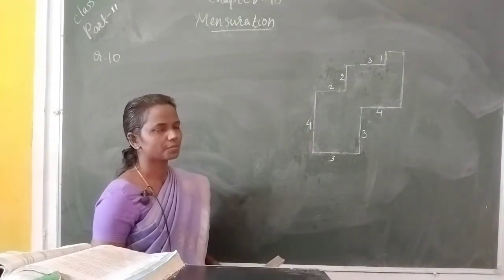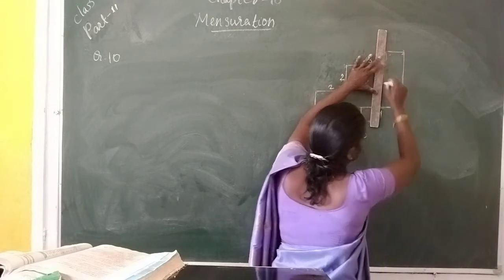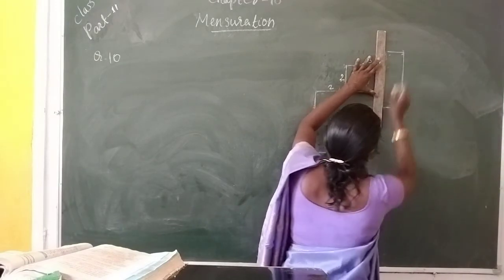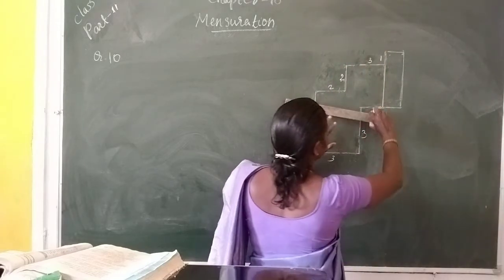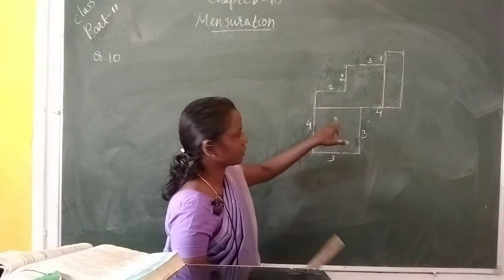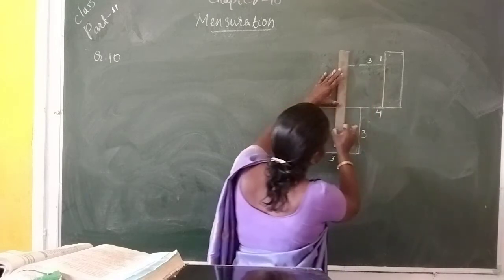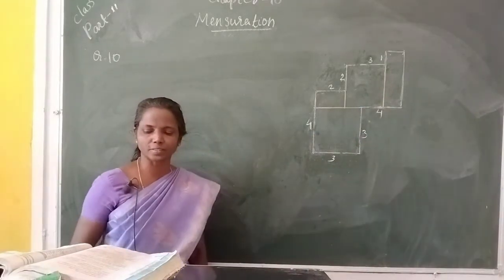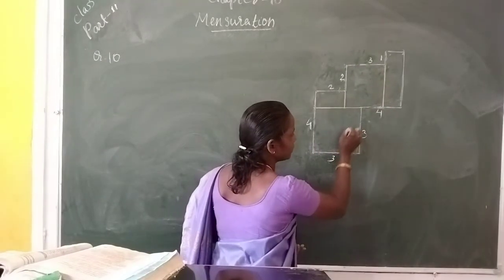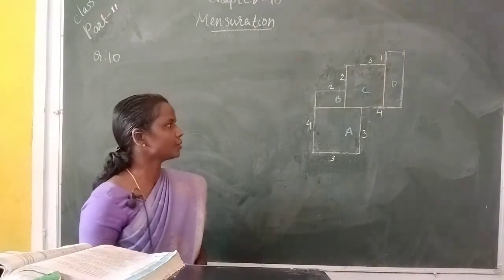First, we can split this figure into rectangle shapes. We can divide this into one rectangle, then another rectangle, then another rectangle. So total we get 1, 2, 3, 4 rectangles. We can label them A, B, C, and D. Then find out the area of each rectangle.